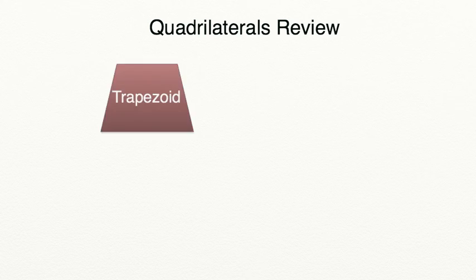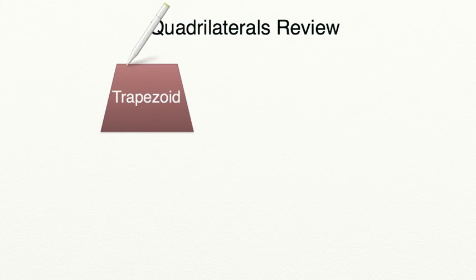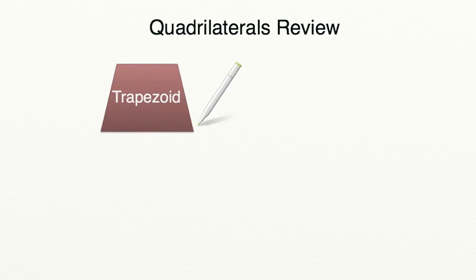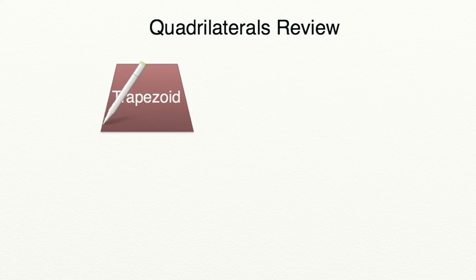Let's begin our review with a trapezoid. A trapezoid is a quadrilateral that has one set of parallel sides and the other sides are not parallel to each other. As you can see with this trapezoid, our top and bottom sides are parallel, which means they will never intersect. But our sides on the left and the right will eventually intersect if they were to continue on, and they are not parallel to each other.